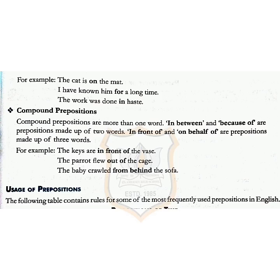Compound prepositions are more than one word. For example: in between, because of, in front of, on behalf of. They are made up of two or more words. For example: 'The keys are in front of the vase.' 'The parrot flew out of the cage.' 'The baby crawled from behind the sofa.'